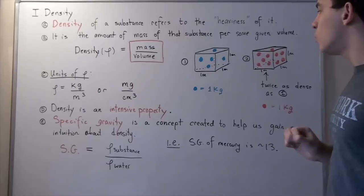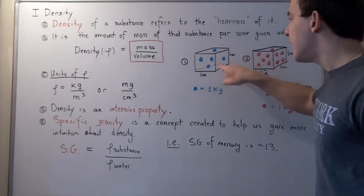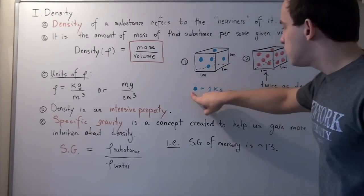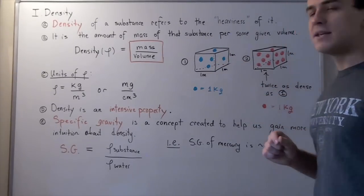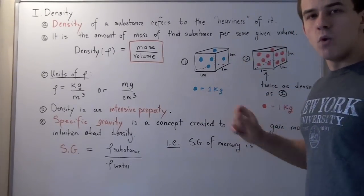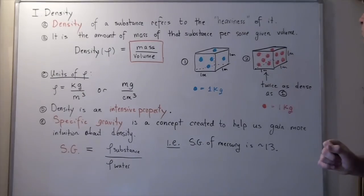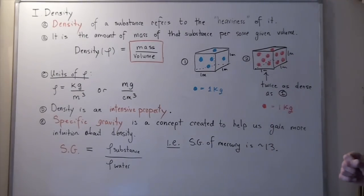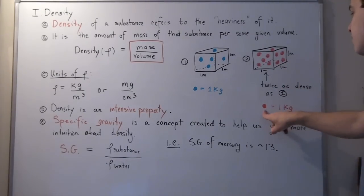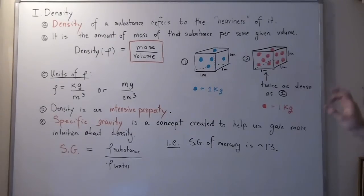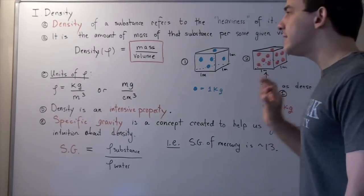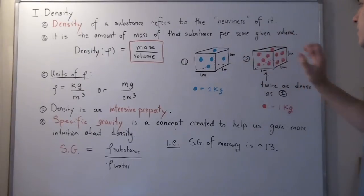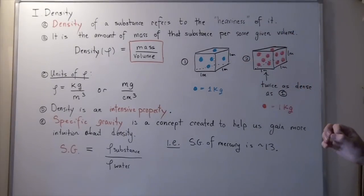In cube number one, I have five blue molecules where each blue molecule has a mass of one kilogram. In cube number two, I have ten red molecules where each red molecule has a mass of one kilogram. I want to see what the density difference is between these two cubes.